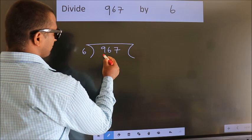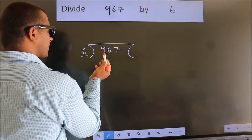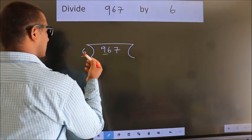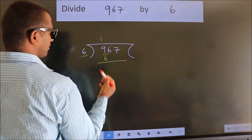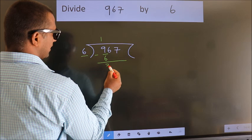Here we have 9, here 6. A number close to 9 in the 6 table is 6 times 1, 6. Now we should subtract. We get 3.